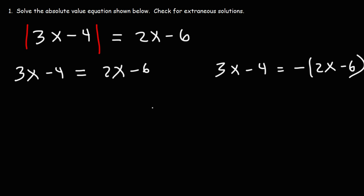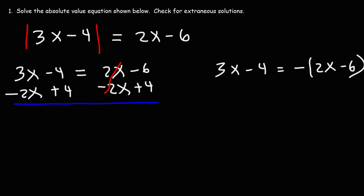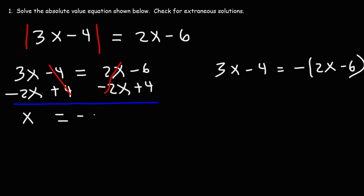For the first equation, subtract 2x from both sides and add 4 to both sides. 3x minus 2x is x, and negative 6 plus 4 is negative 2. So our first potential solution is x equals negative 2.